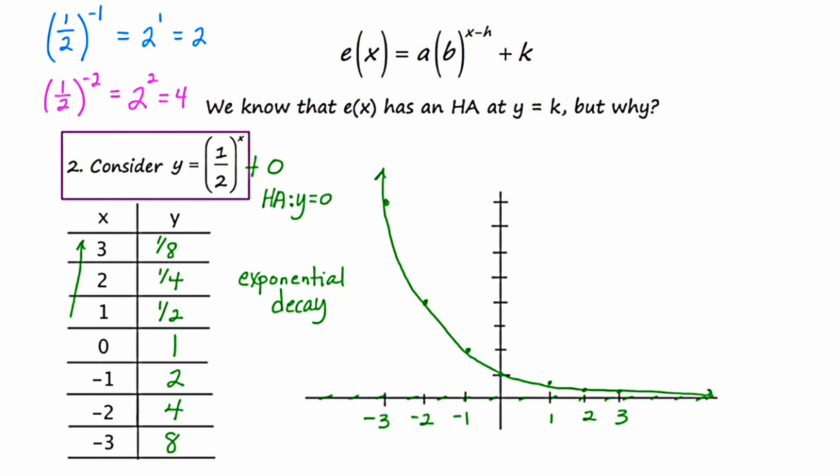And now I'm going to try to draw this decay curve. So I missed a couple of the points, but I think you get the idea. So in this lesson, we talked about why exponential functions have horizontal asymptotes.